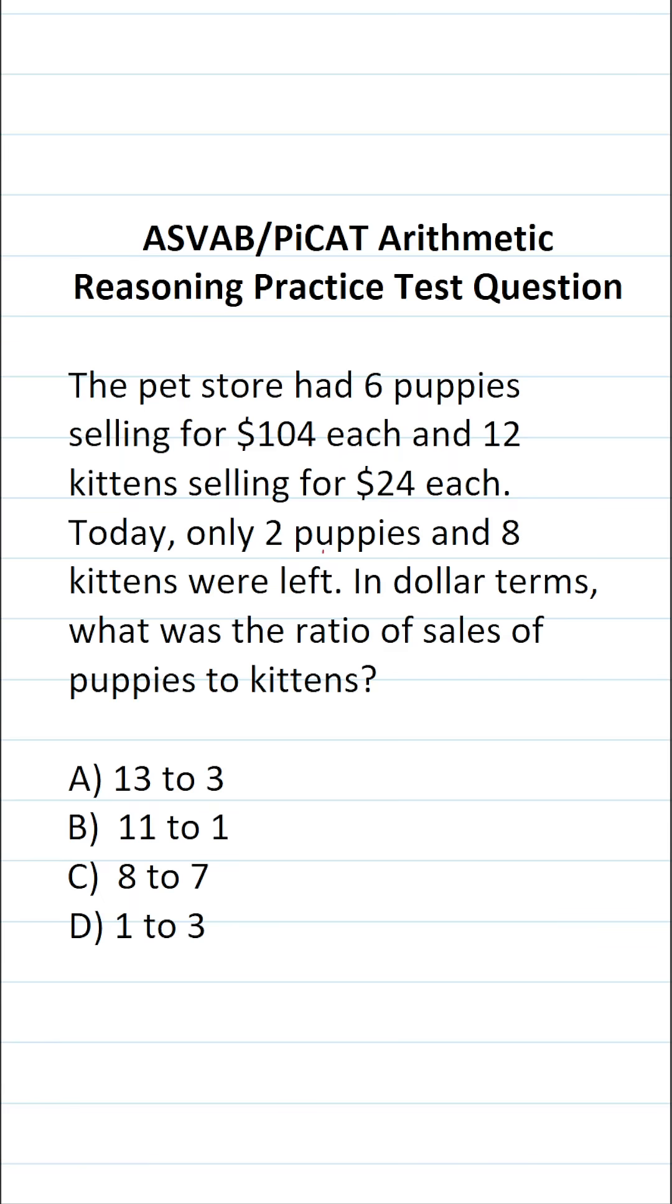All right, so the first thing we have to determine is how many puppies and kittens sold respectively. So initially, we had six puppies in the store, and then only two were left. So six minus two is four. That means four of them were sold.